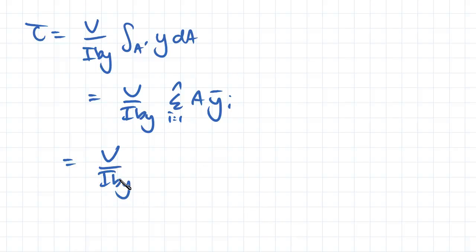For our first bottom area, the width was the breadth of the flange, the height was the thickness of the flange, and we had a distance between centroids of d/2 minus the thickness of the flange/2.